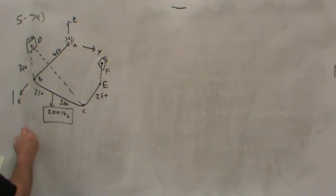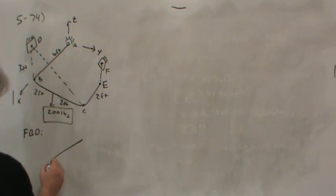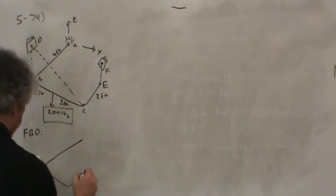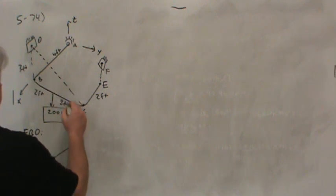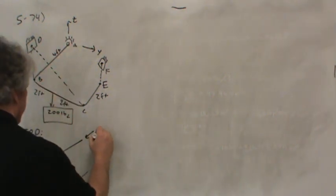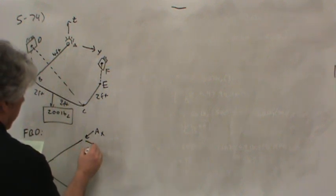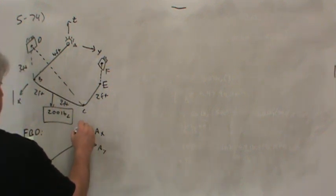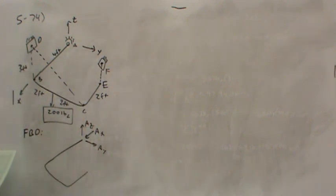So the free body diagram looks something like the following. But at A, since it's a ball joint, there can't be any moments there. So there would be an AX potentially, and a Y. Notice I'm drawing these reaction forces in positive coordinate directions, AX, AY, AZ.